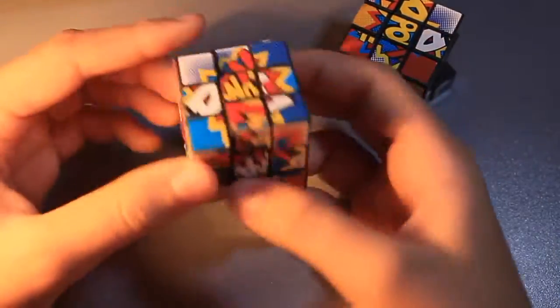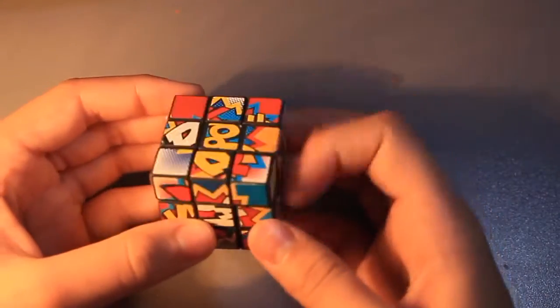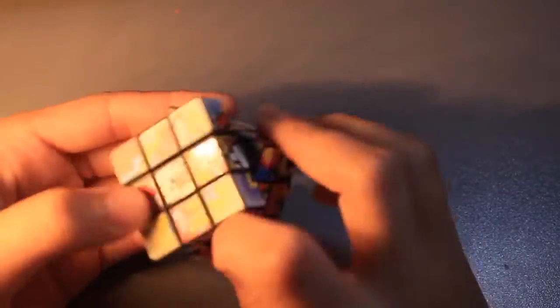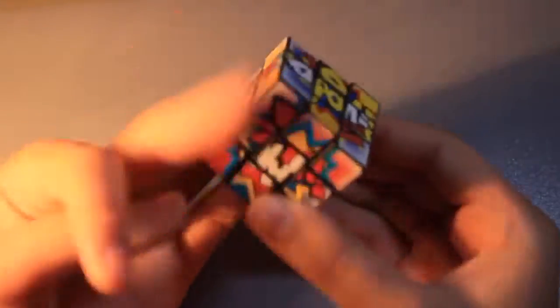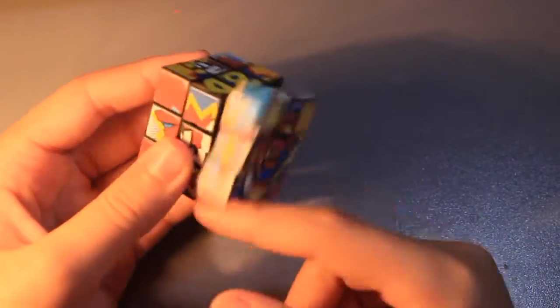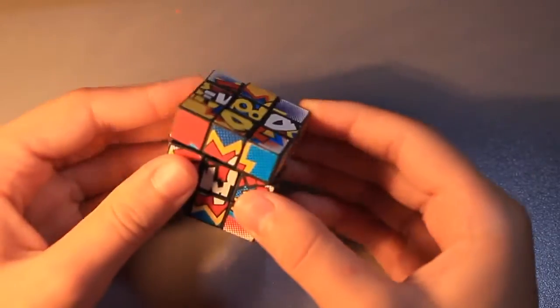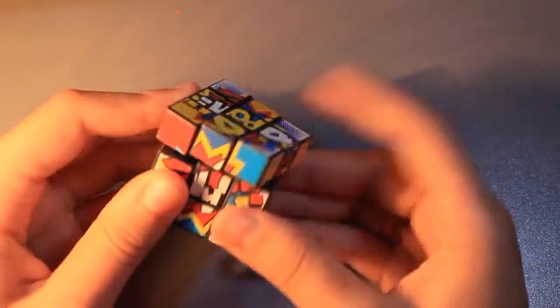I also have two of these unbranded picture cubes. This one turns really badly. I've only solved it, I think, once. This one I did like 10 solves on. And then I lubed it. And now it's super loose and fast. It still doesn't corner cut very much, but it's okay.